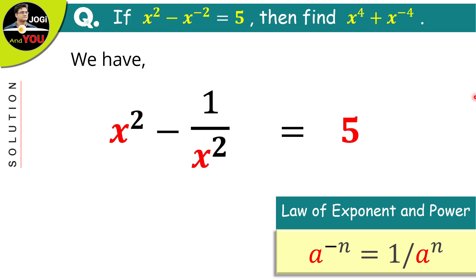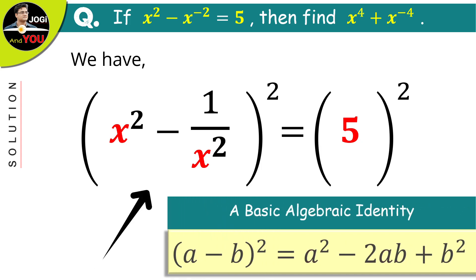The first thing I am going to do is square both the sides, and to solve this left side, we will use a basic algebraic identity which is a minus b the whole square is equal to a square minus 2ab plus b square. And on the other side here we have the square of 5 whose value will be 25.